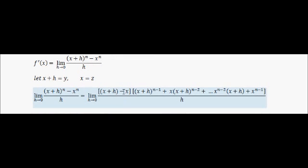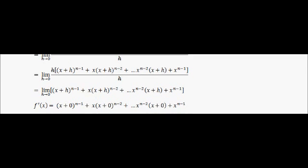Having derived this, we can see that the left-hand bracket simplifies to h. We've got an h here and an h on the denominator. These cancel out, which is fantastic, because since h tends towards zero, we had a zero on the denominator — and dividing by zero is a problem in mathematics. The fact that the h's cancel means we no longer have a denominator. So cancelling those out, we've simply got this remaining expression.